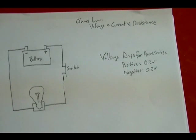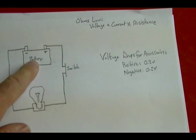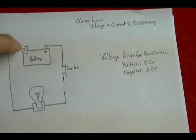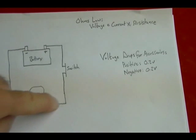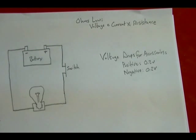I've got a simple circuit here where I've connected a light bulb and a switch to a voltage source — in this case it's a battery. If I was to turn on the switch, current from my voltage source would flow from the battery to the light bulb and then back to the battery. Whenever you have current flow through a circuit, if that current comes under the influence of anything that's creating resistance, you're going to get a voltage drop.